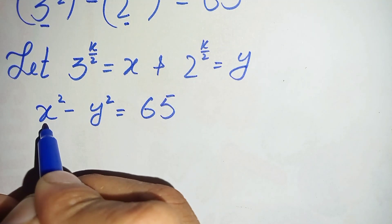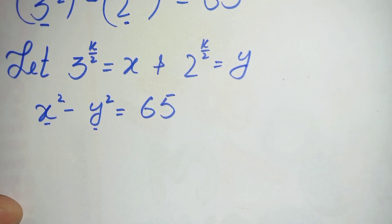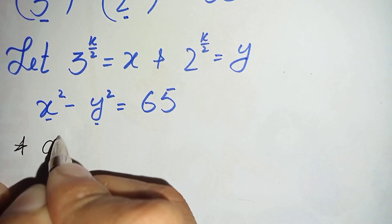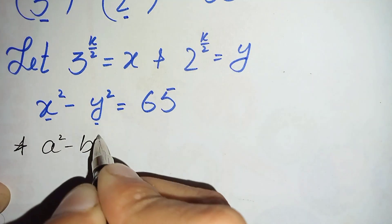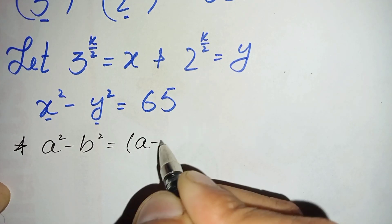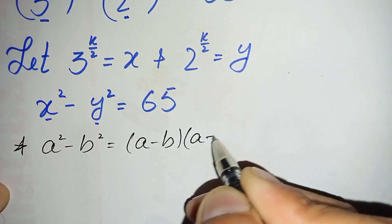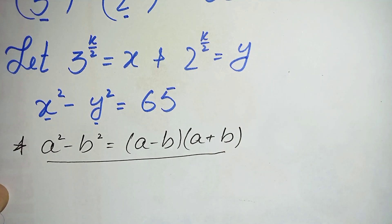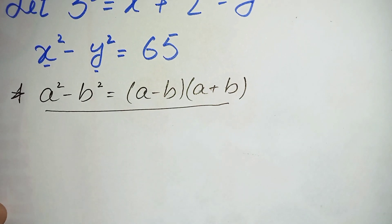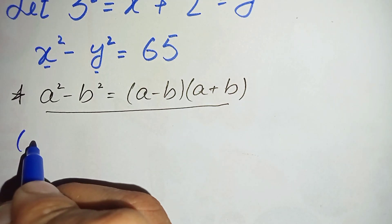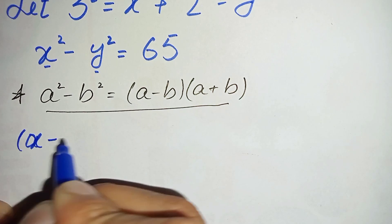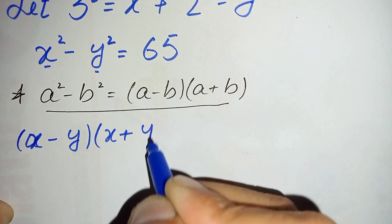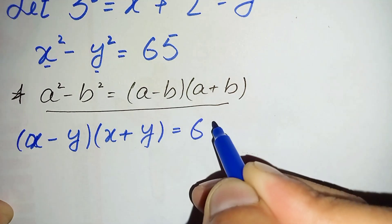On the left hand side we will use the algebraic identity a squared minus b squared. We will use the identity: a squared minus b squared is equal to a minus b times a plus b. Using this identity on the left hand side, this equation becomes x minus y times x plus y is equal to 65.